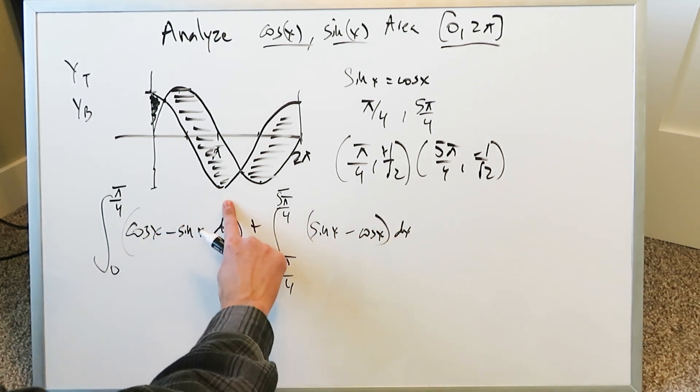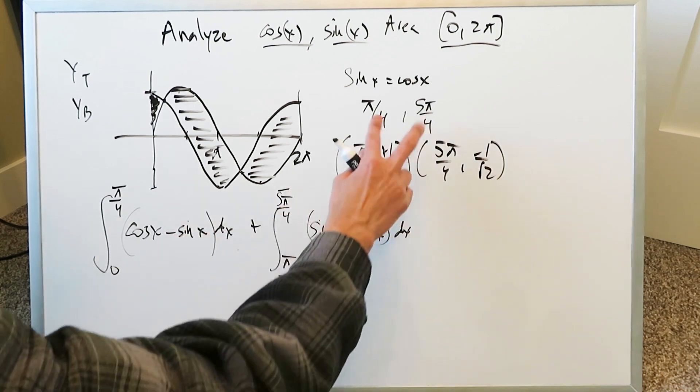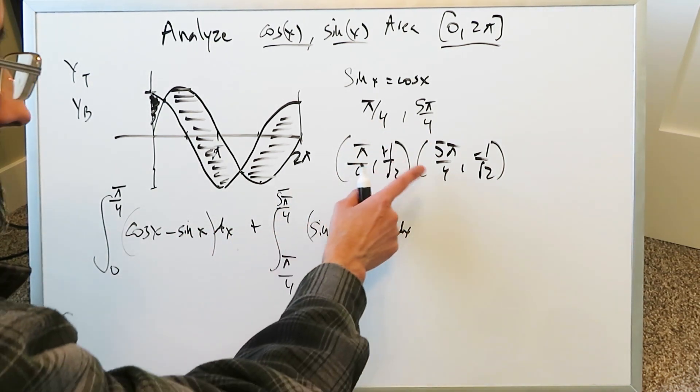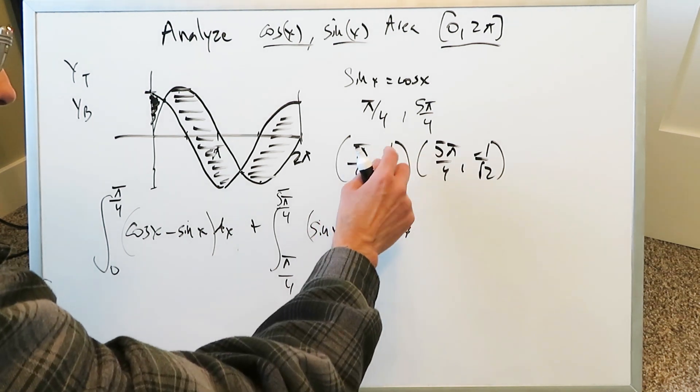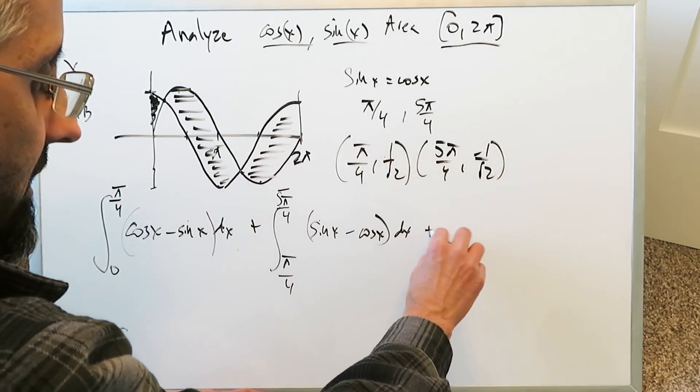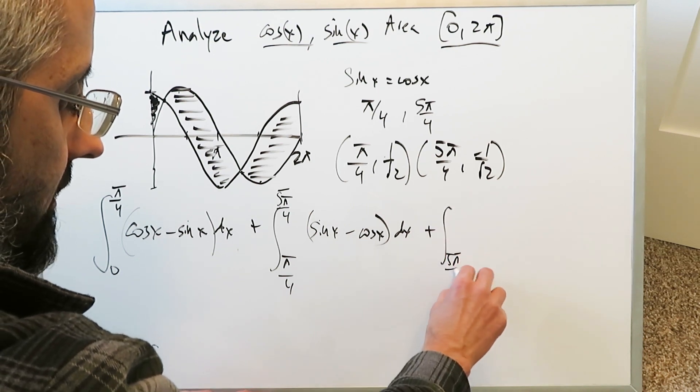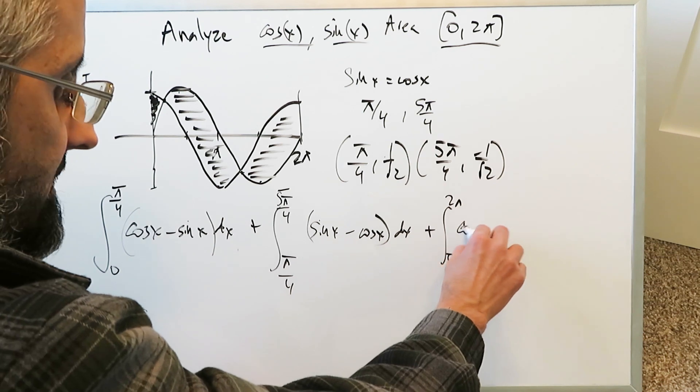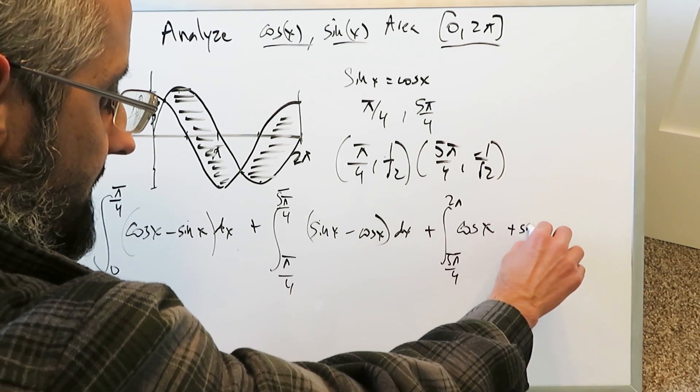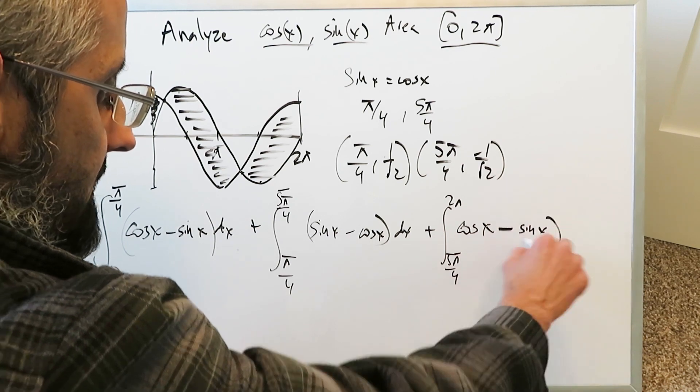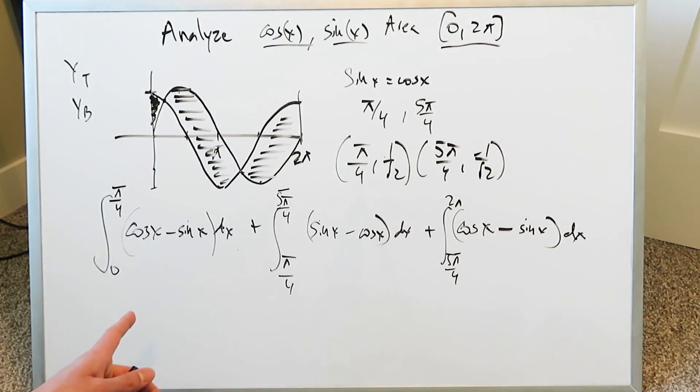You can't get mixed up in developing the intersection points, because if you can't develop these, you probably cannot do the question. From 5π/4 to 2π, cos(x) is the top boundary and sin(x) is the lower boundary. It's always a minus sign between them. You just have to integrate this.